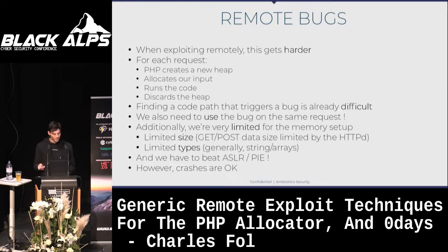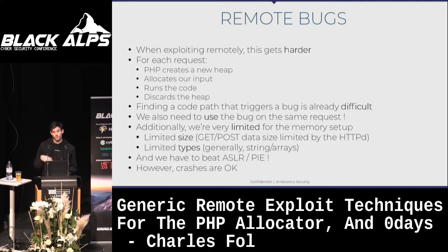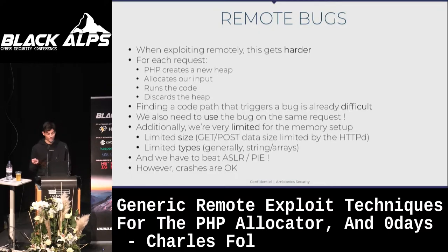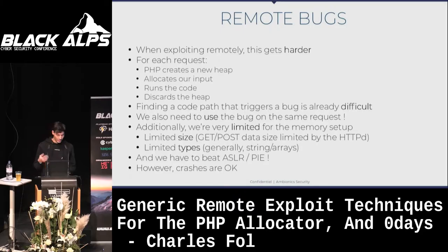Remotely, it gets a little bit harder. When PHP receives a request, it will create a heap, allocate your input — GET, POST, cookies — run the code, and then discard the heap entirely. So if you have a use-after-free, it will be gone after the request has been executed. You have to find a CMS or framework that actually uses the vulnerable function, find a way to trigger it, and then use the bug, all in the same request. You also have limitations on data size and types sent over HTTP — you can usually only send strings or arrays. Luckily, those are the two types we need to exploit.